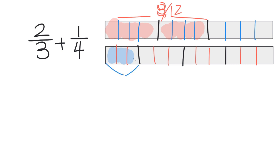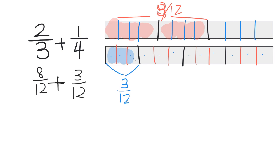And this one-fourth is no longer one-fourth. Counting the pieces, it's now three out of twelve — three out of twelve. And look at that: two-thirds is now eight-twelfths, one-fourth is now three-twelfths, and we can add those together to get eleven-twelfths.